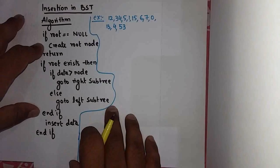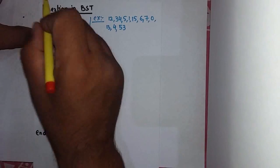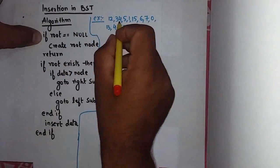The second operation of binary search tree that we are going to cover in this lecture is insertion, inserting an element in binary search tree. This is how we cover an example.